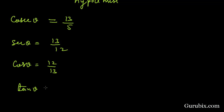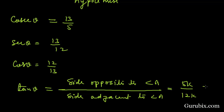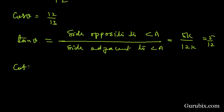Now we shall find tan theta, which equals side opposite to angle A over side adjacent to angle A. This is 5K over 12K, which means 5 over 12. And cot theta, the reciprocal of tan theta, equals 12 over 5. This is the solution of the question. Thank you.